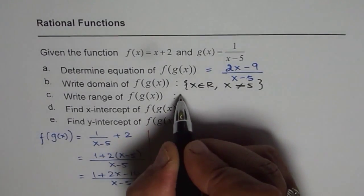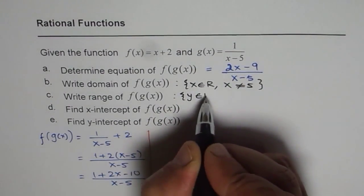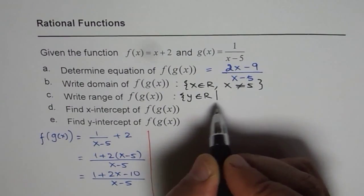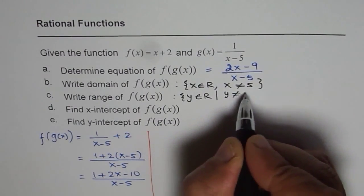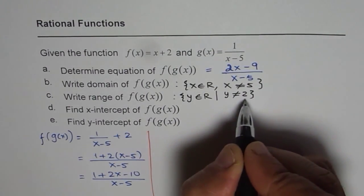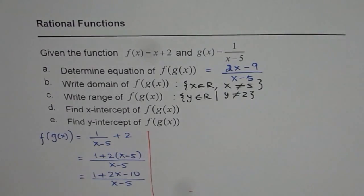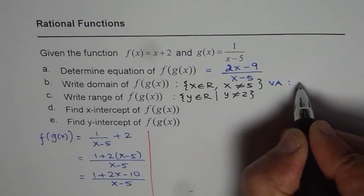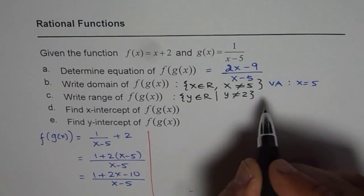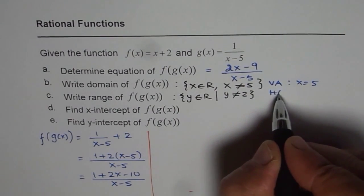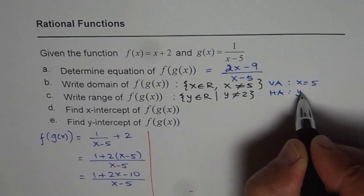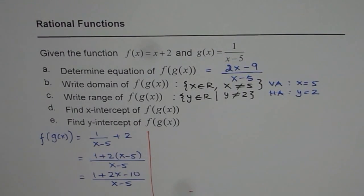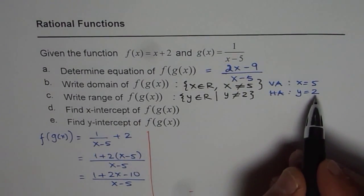So range is y belongs to real numbers such that y is not equal to 2. Since there is a horizontal asymptote. The first condition is because we have a vertical asymptote at x equals 5. And second condition is because we have horizontal asymptote at y equals 2. So function is trying to approach 2 but it is never there.